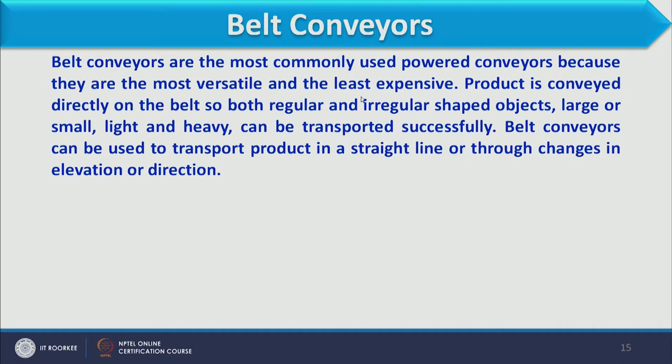Belt conveyors are the most commonly used powered conveyors because they are more versatile and least expensive. They are used extensively in chemical plants and industries, one reason being their good capacity and lower cost. In a belt conveyor, a continuous belt moves and carries material from one location to another.